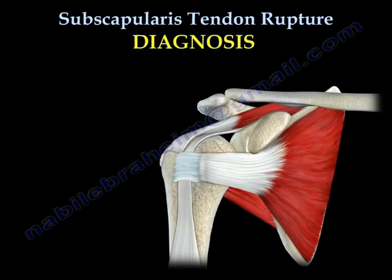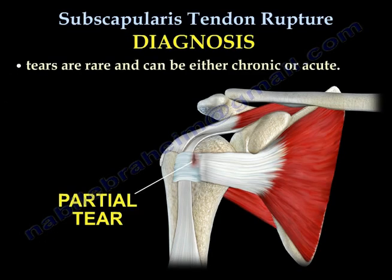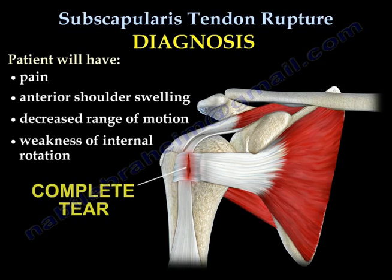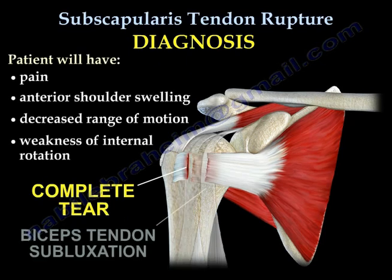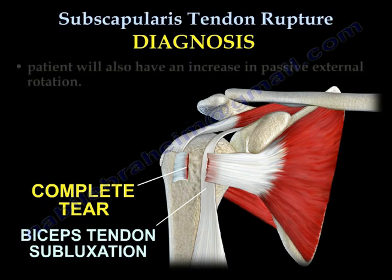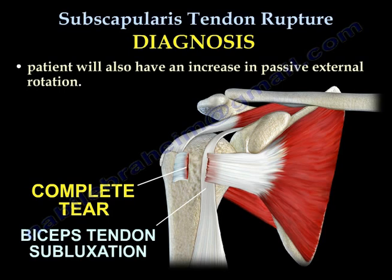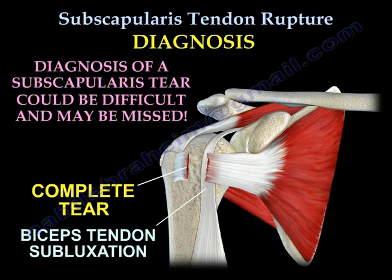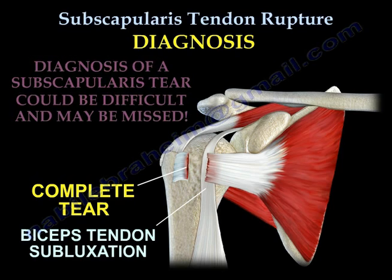Diagnosis: tears are rare and can either be chronic or acute. Patients will have pain, anterior shoulder swelling, decreased range of motion, and weakness of internal rotation. The patient will also have an increase in passive external rotation. Diagnosis of a subscapularis tear can be difficult and may be missed.